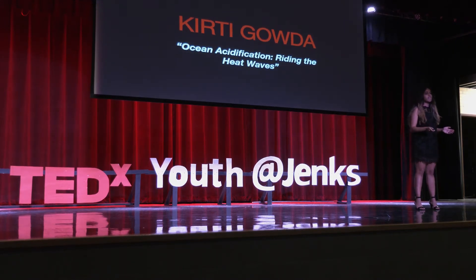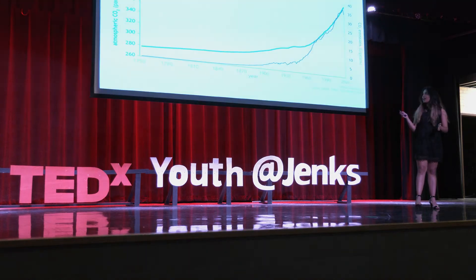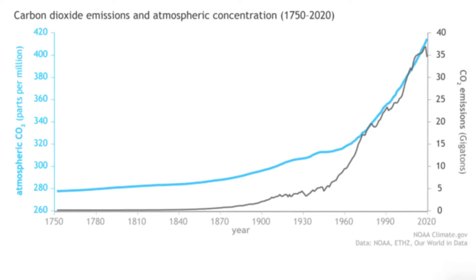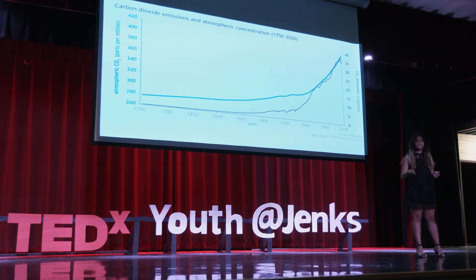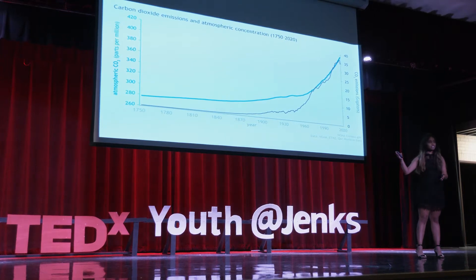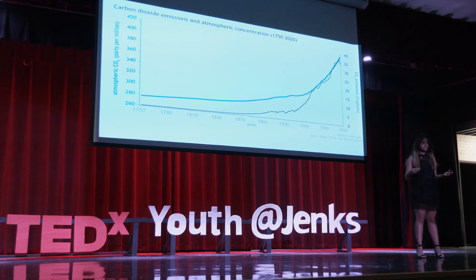This reduction in pH is happening because of carbon dioxide emissions. This graph, made from the NOAA — an organization comprised of climate scientists and academic institutes from around the world — represents 1750 to 2020 atmospheric carbon dioxide emissions. The blue line, atmospheric carbon dioxide, and the gray line, which is the carbon dioxide emitted from us, rises simultaneously.